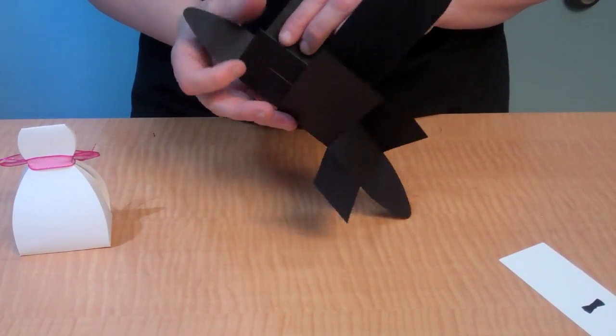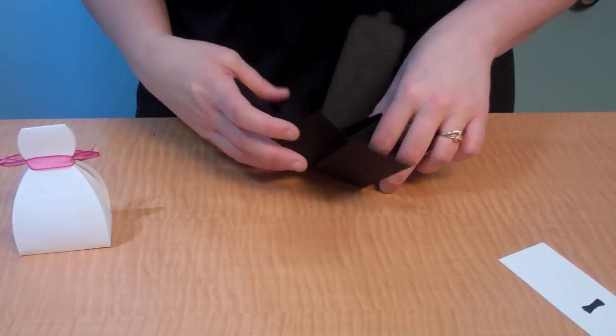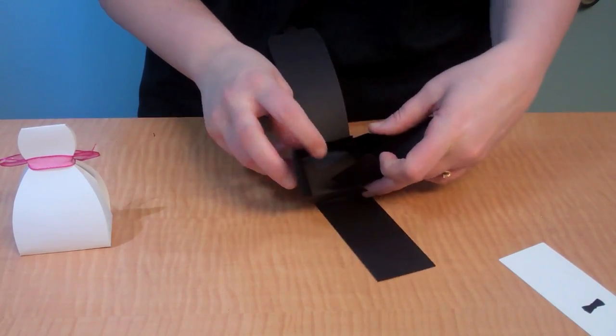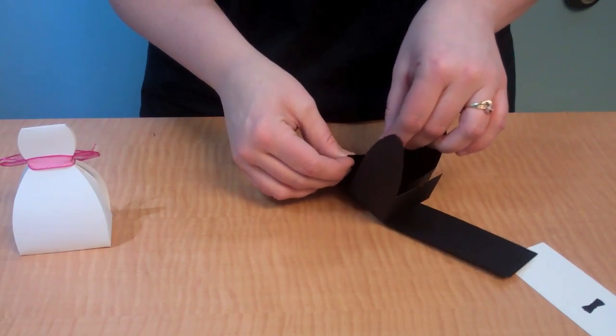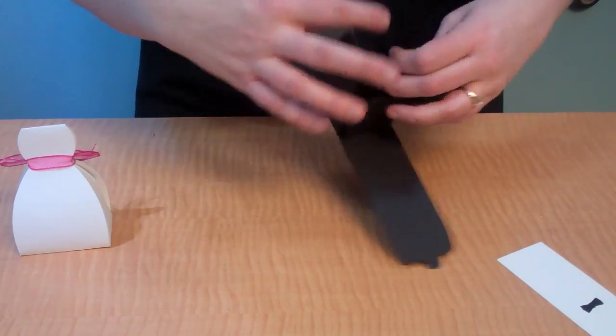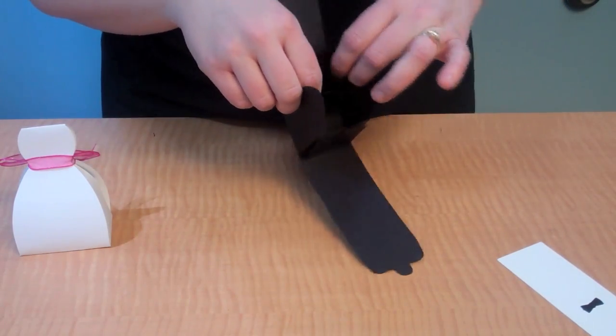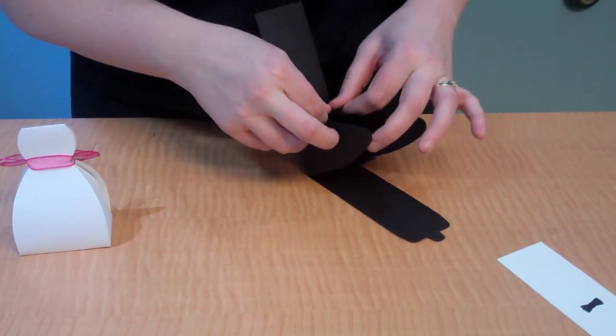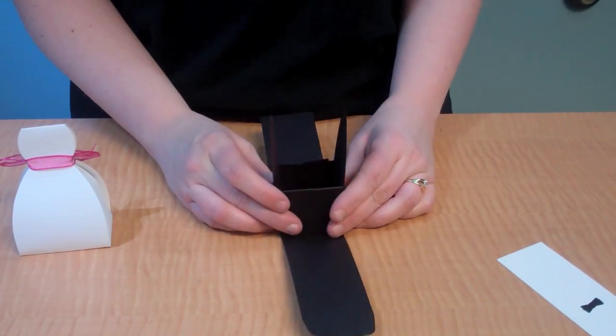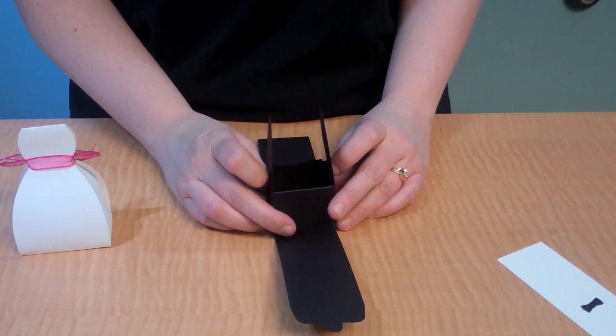I'm using just an 80-pound cardstock, but you could use a thicker one, depending on what kind of candy or what you're putting in there. He goes together the exact same way. There's two little slits in the box, so you would just attach those slits together. This is when you'd want to put that candy in there.